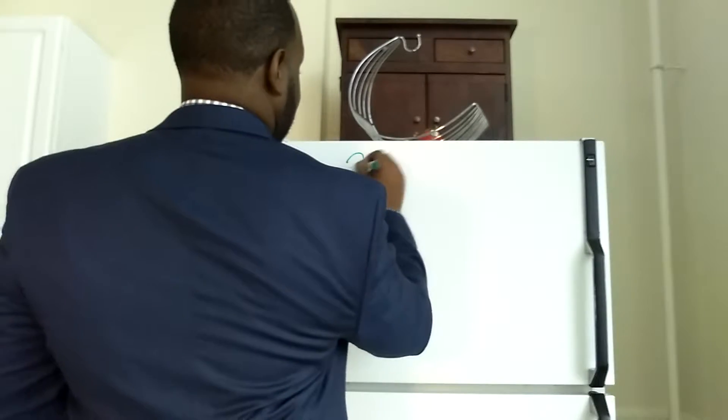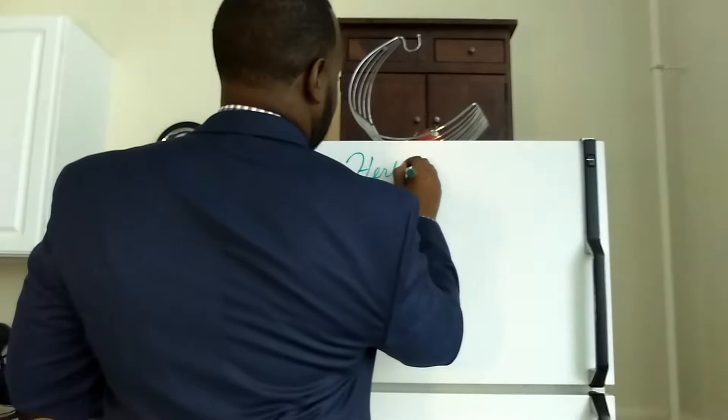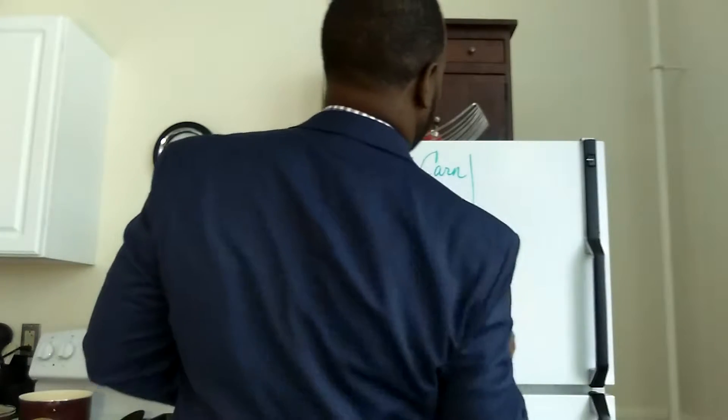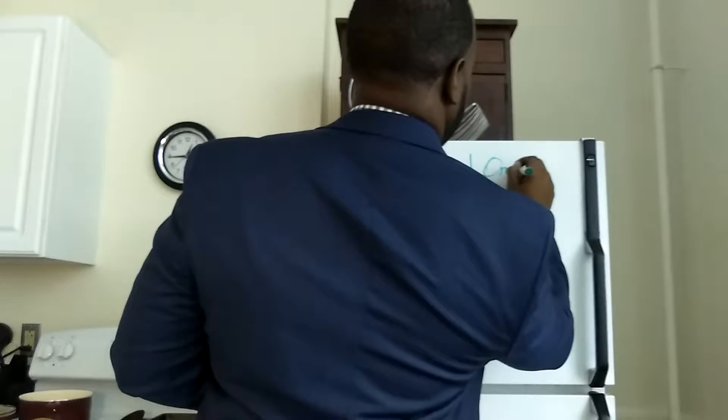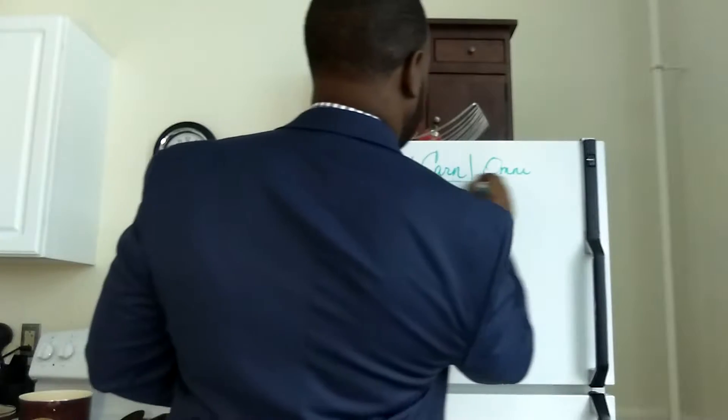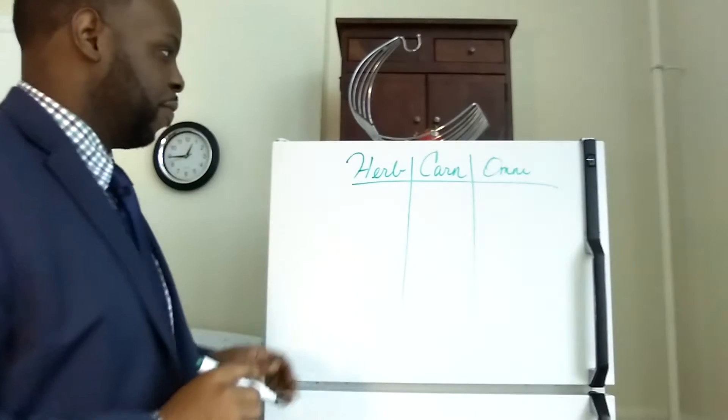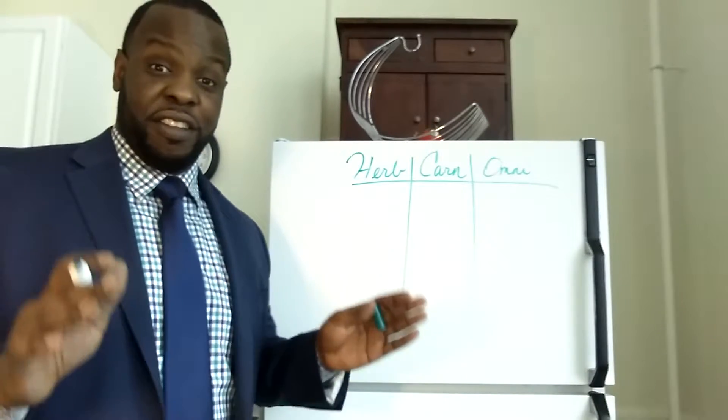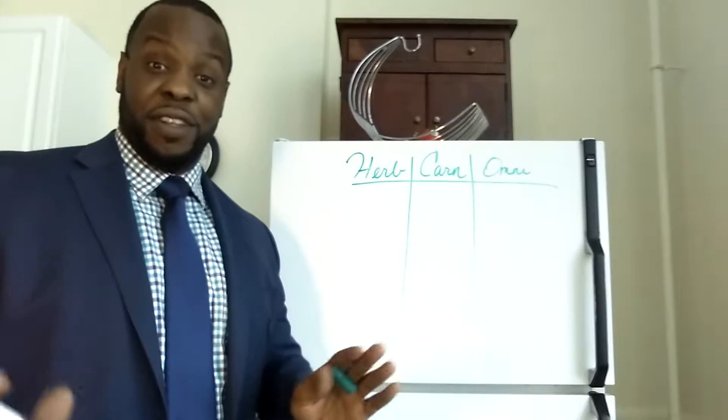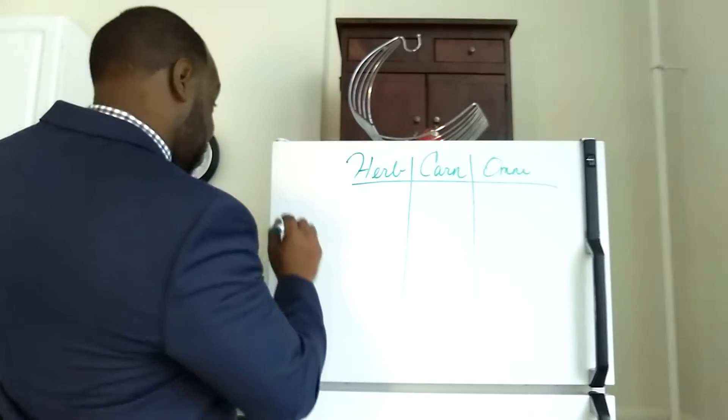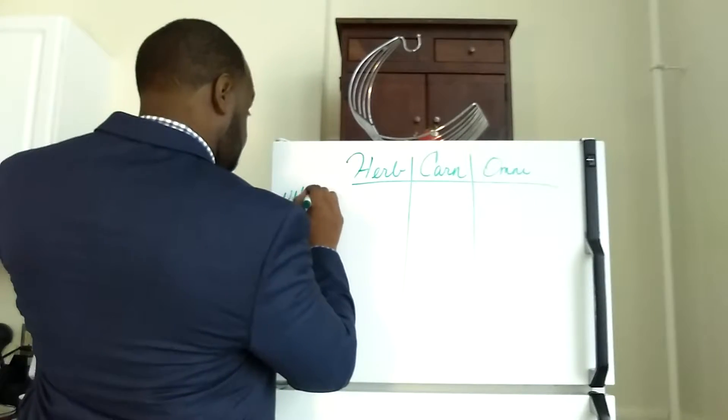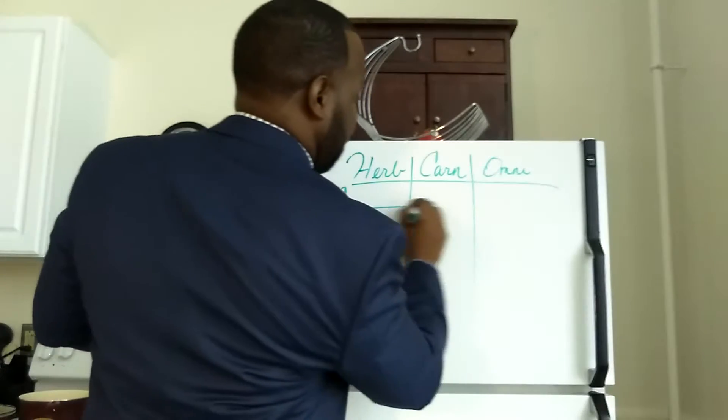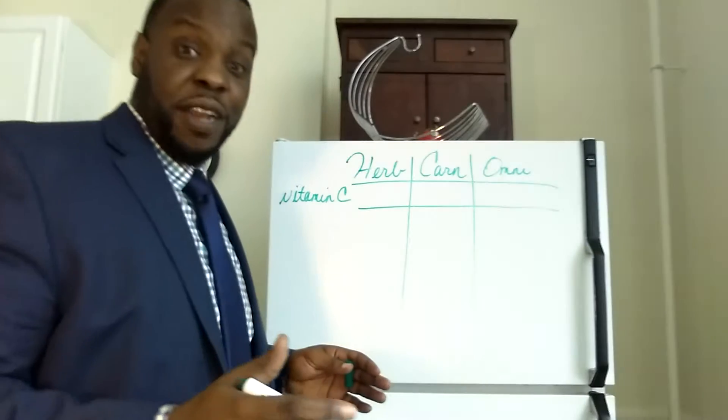So what kind of animals are we? Because it's very important for an animal to eat the diet that it's designed for. So you have herbivores, carnivores, and omnivores. Where do we fall in? Well, we can look at a few different things. Let's just take, for example, vitamin C.